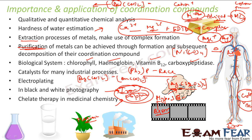Coordination compounds are also used in dyes — for pink, blue, and other colors in textiles. This is a huge application. In medicine, EDTA is also used for treating lead poisoning. Some coordination compounds also inhibit tumor growth and can be used to treat cancers. These kinds of ligand-based coordination compounds have broad medicinal applications.